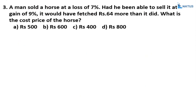Third question: A man sold a horse at a loss of 7%. Had he been able to sell it at a gain of 9%, it would have fetched 64 rupees more. What is the cost price of the horse?